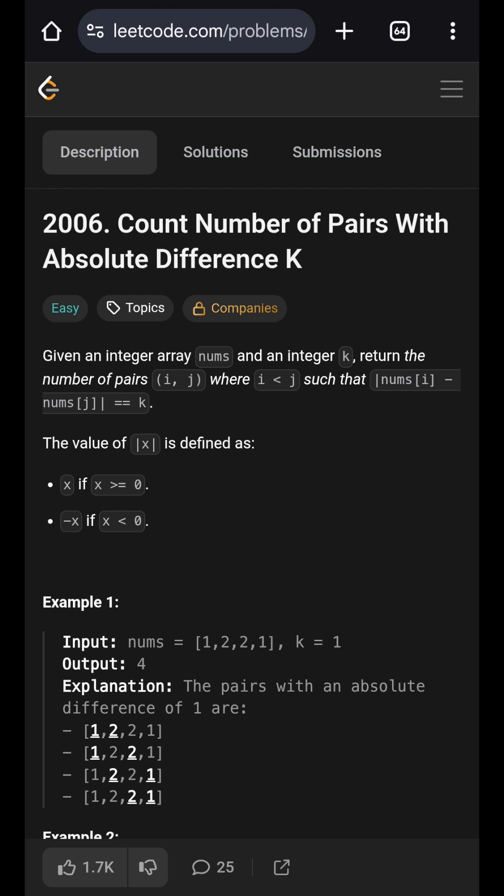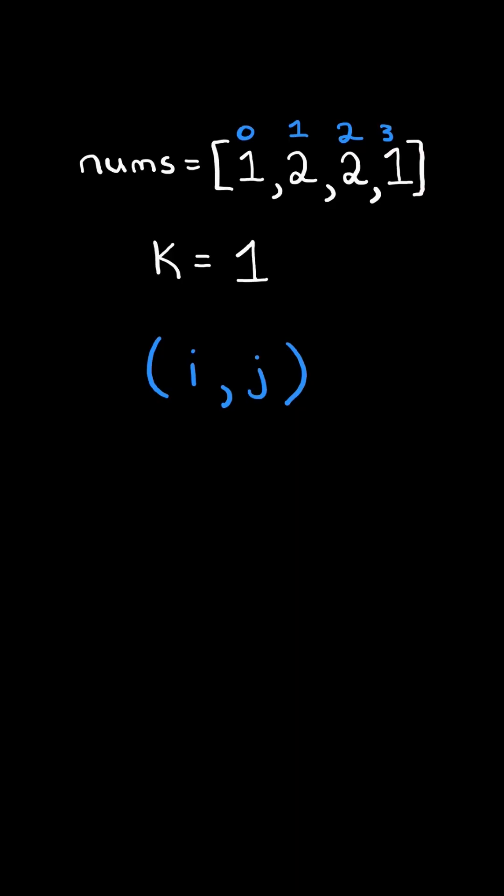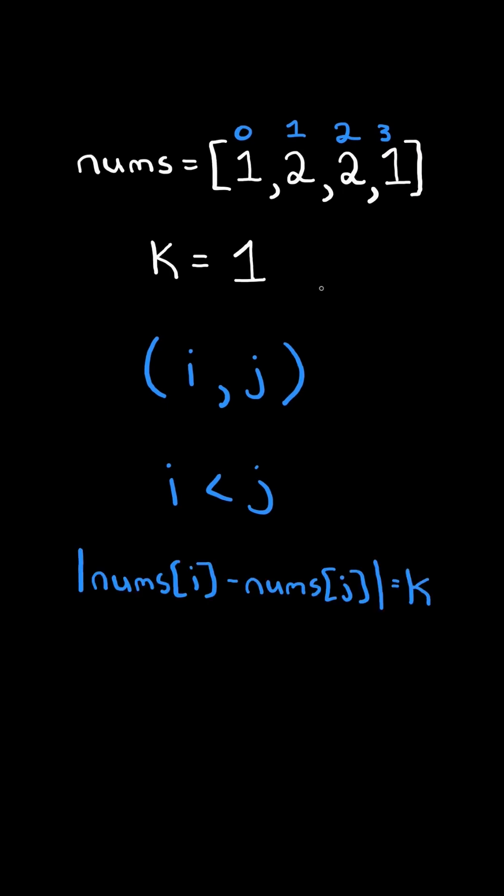Count number of pairs with absolute difference k. Return the number of pairs (i, j) where i is less than j, and the absolute value between nums[i] and nums[j] equals k.